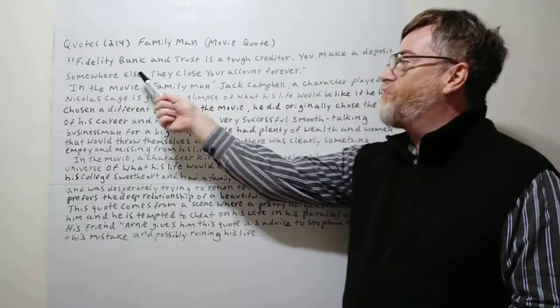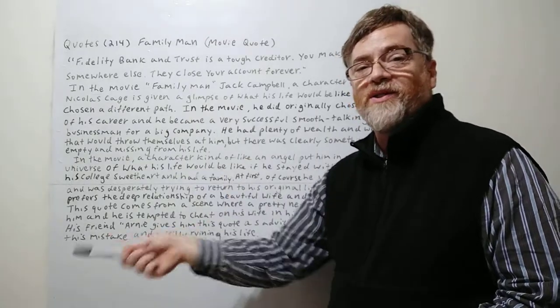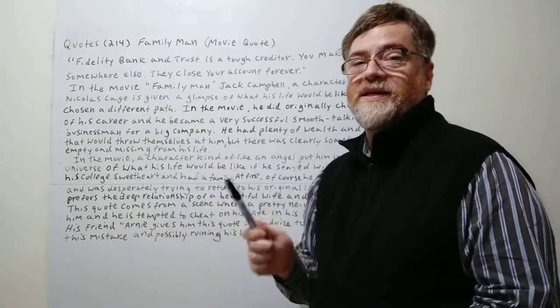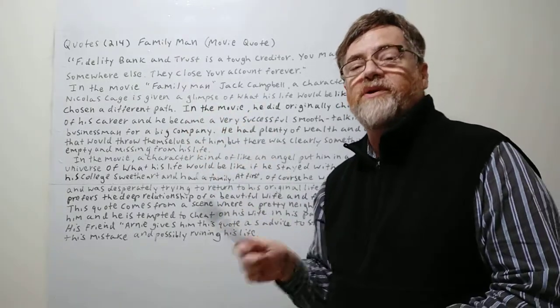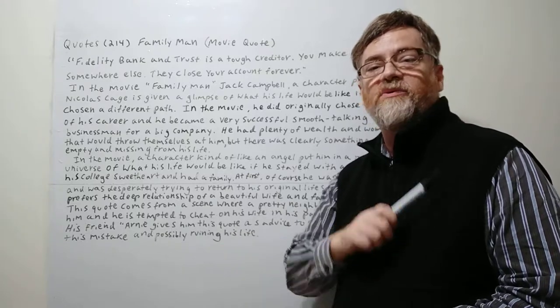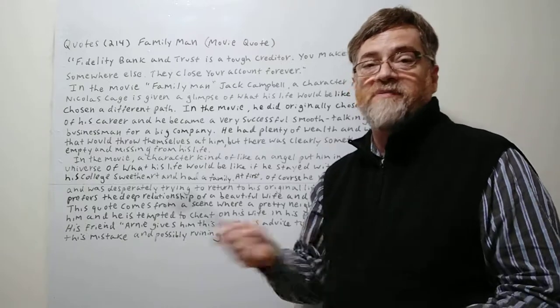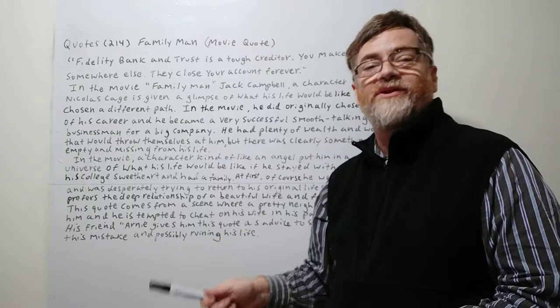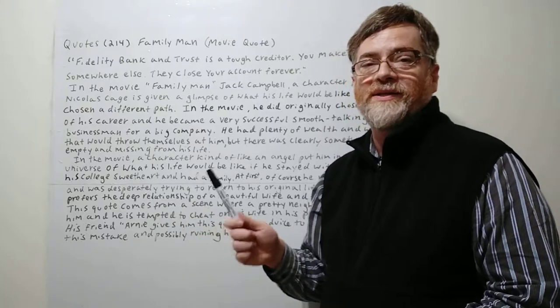If you make a deposit somewhere else, meaning like if you cheat on your wife you go with another woman, they close your account forever. Meaning that it would probably ruin your life. You'll never have your beautiful wife again. She will probably leave you and you'll never make love with her again. So they'll close your account forever.